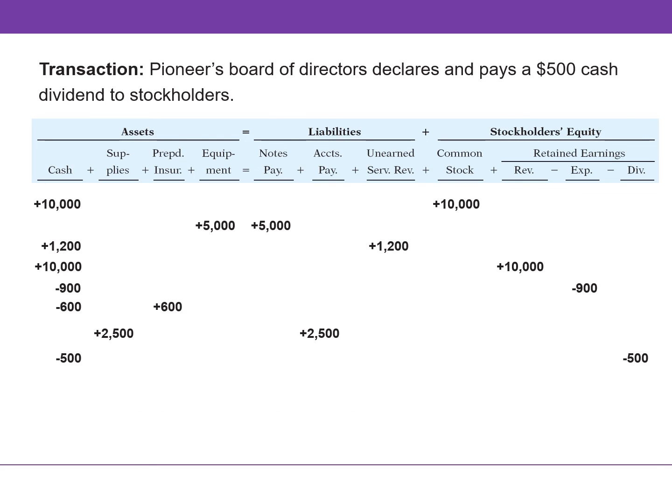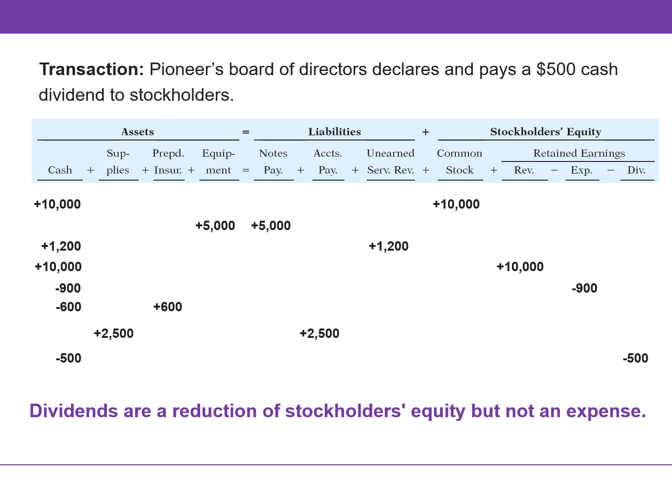In this transaction, Pioneer paid a $500 cash dividend. Cash is decreasing as well as dividends, because dividends reduce stockholders' equity. Please note that dividends are not an expense — they are a distribution to the stockholders or the owners.